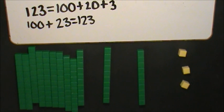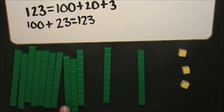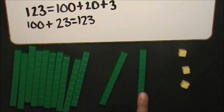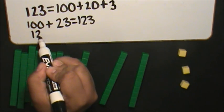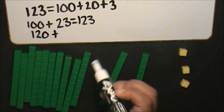Then, I will represent the number in expanded form. The value of each 10 is 10, 20, 30, 40, 50, 60, 70, 80, 90, 100, 110, 120. The value of the tens is 120. The total value is 123.